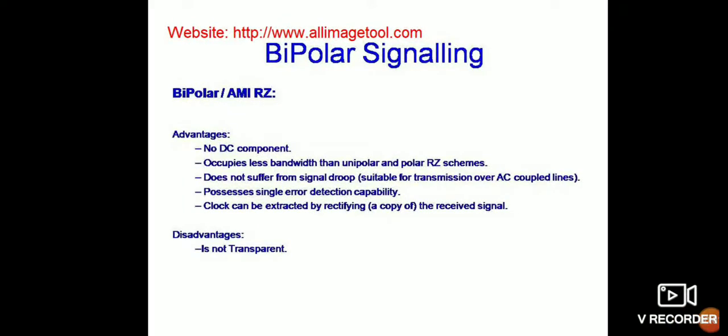In continuation of the previous lecture about data formats, we have discussed today the bipolar signaling. The bipolar is also called AMI RZ signaling. RZ is known as Return to Zero. The bipolar shows there are two types of polarity, either low or high, or it can be one or zero. What are the advantages of bipolar or AMI RZ signaling?